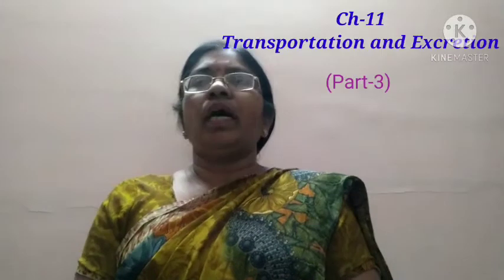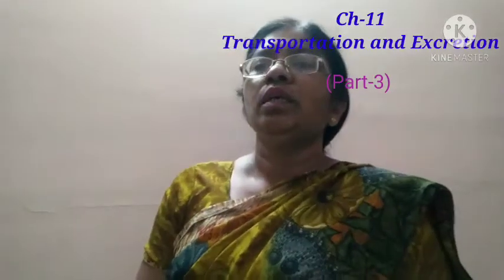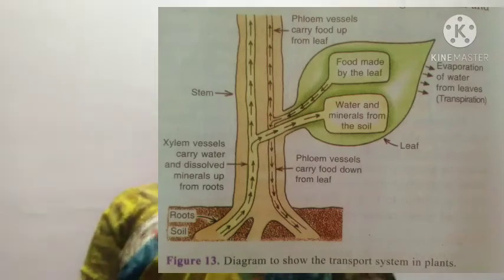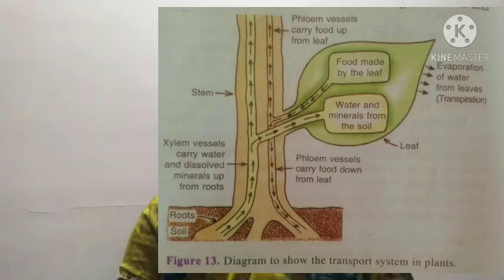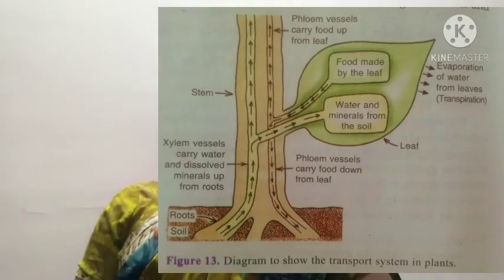In the first video of this chapter 11, I discussed the transportation of different materials — food, waste materials, and nutrients — in the human body. Now in this video, I am going to explain how water, minerals, and food are transported in the body of plants. In plant bodies, transportation occurs in two forms.